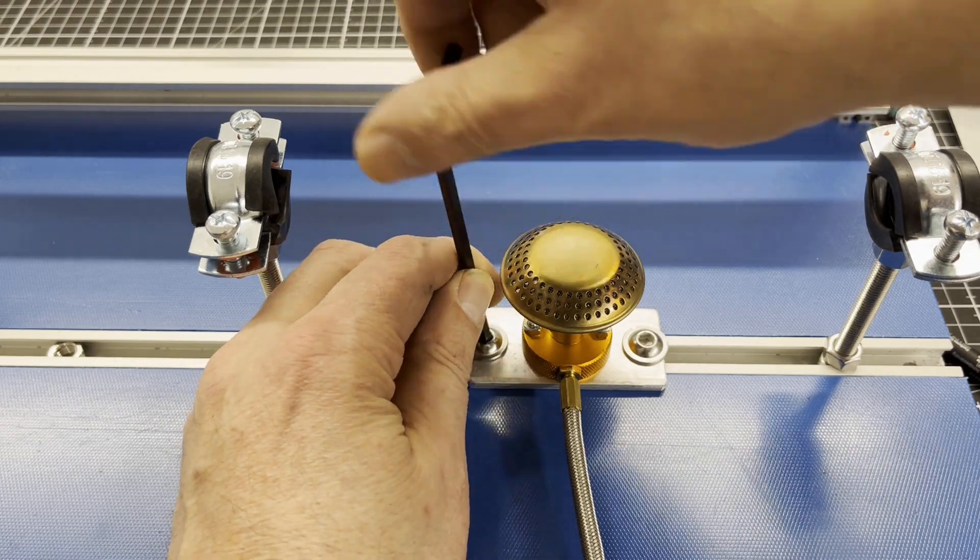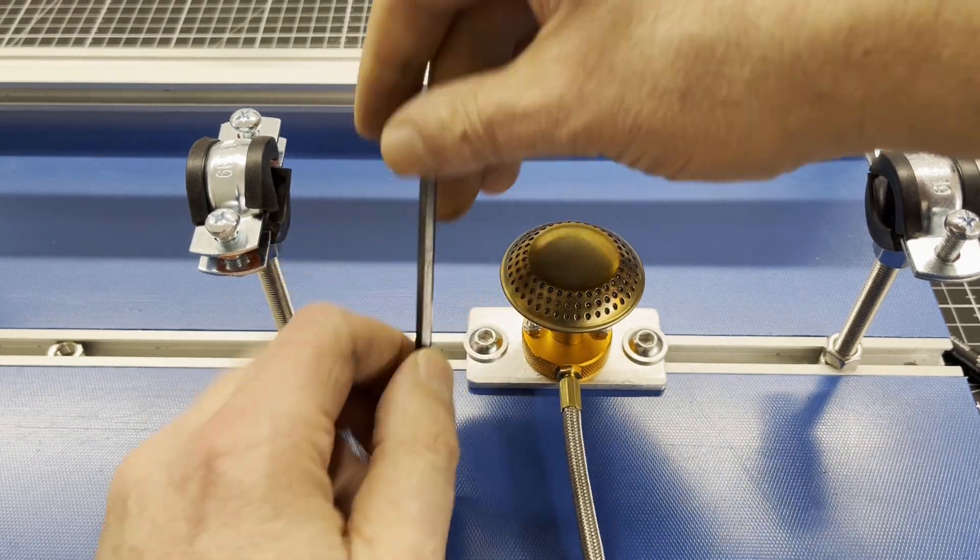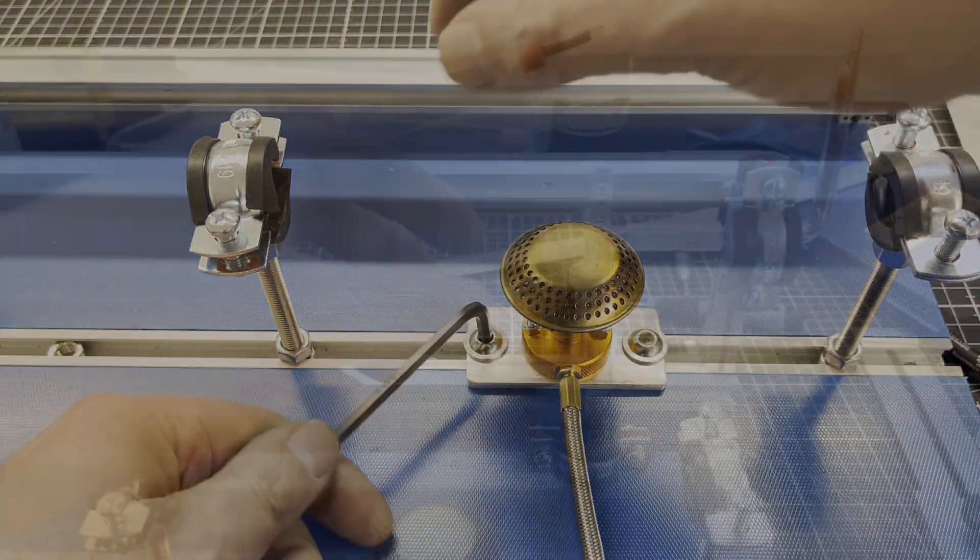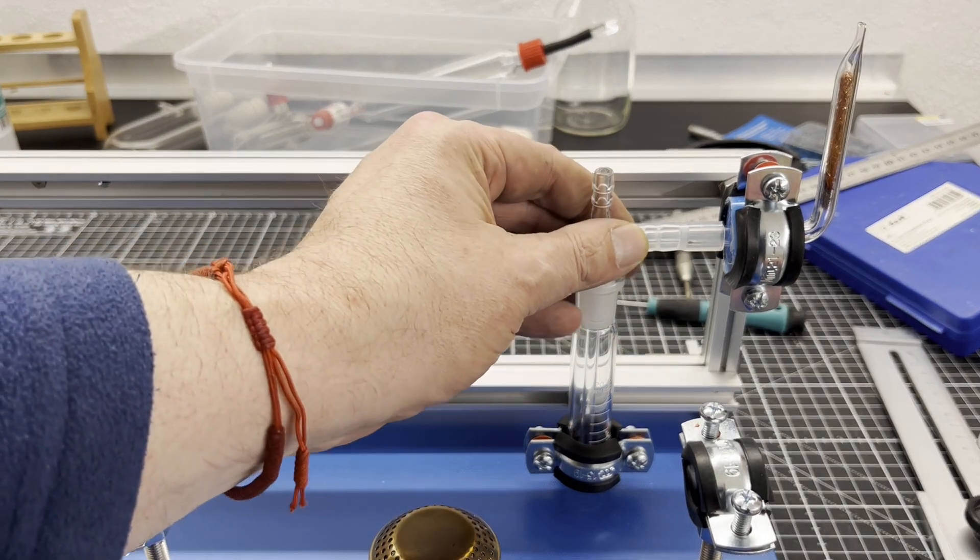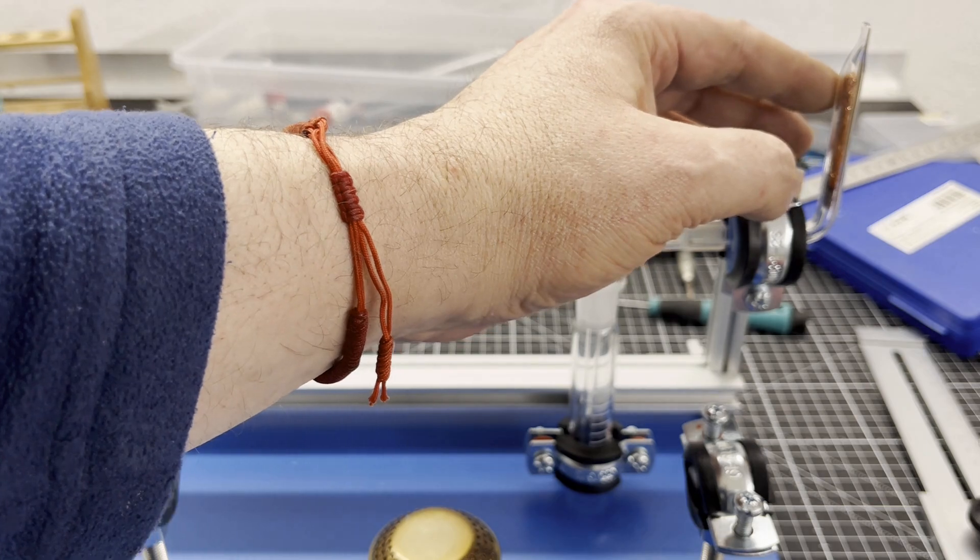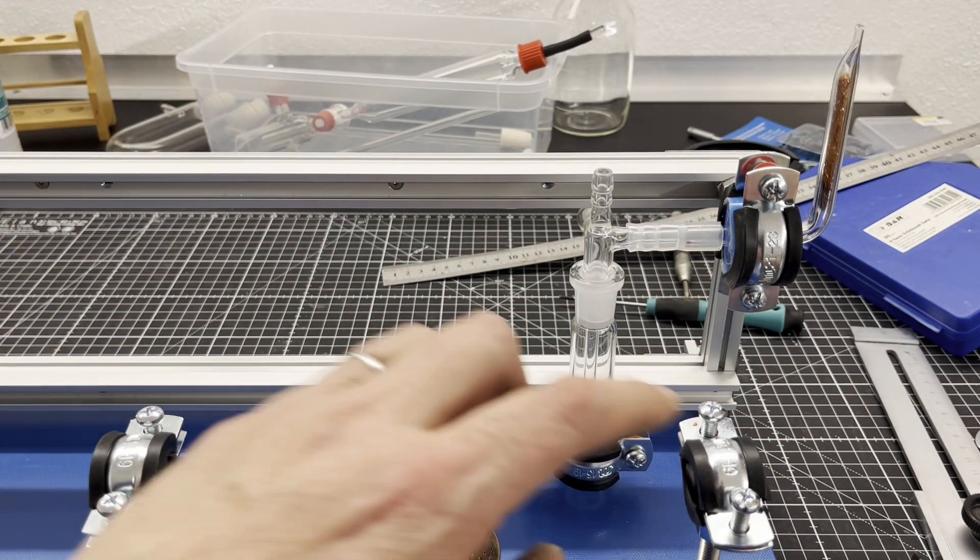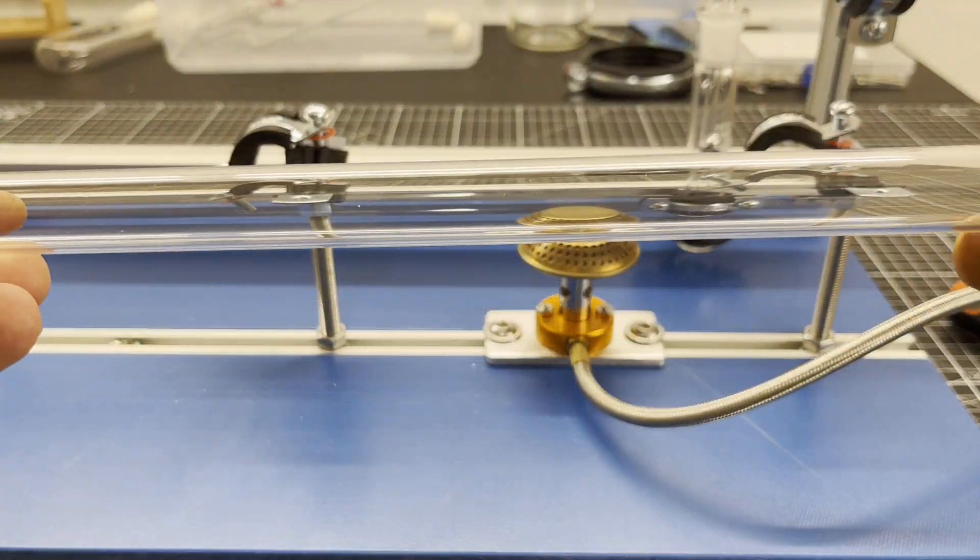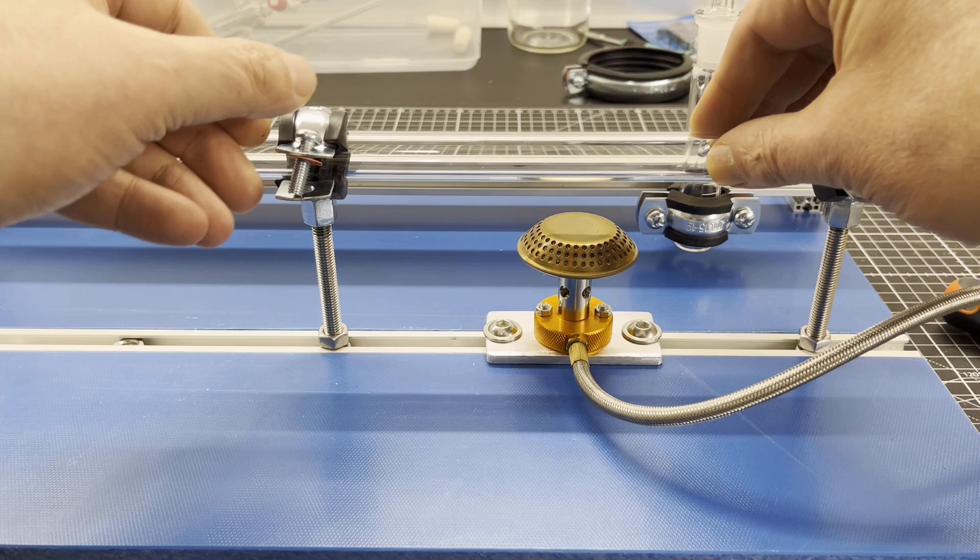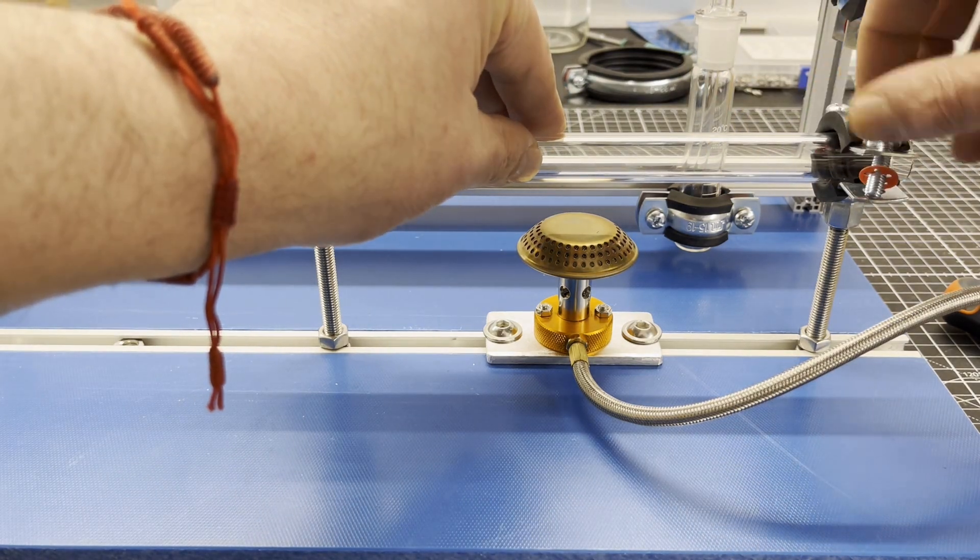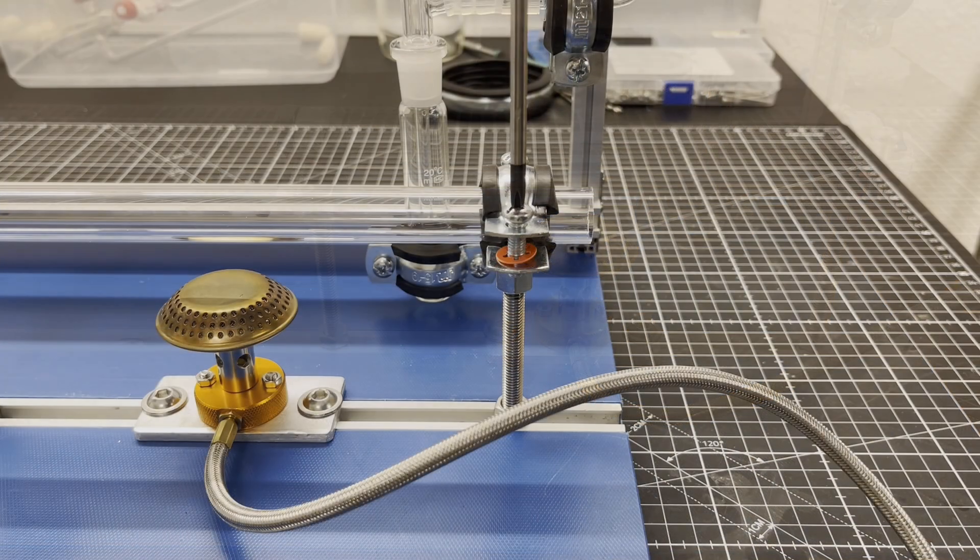You may be wondering why I don't just use lab stands and clamps. The reason is that the whole thing is not without danger because of the hydrogen. No lab stand should tip over, no clamp should come loose, and no hose should come off. I will show the rest of the construction of the apparatus without commentary in fast motion before I explain how it works.